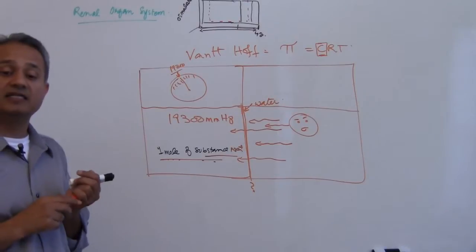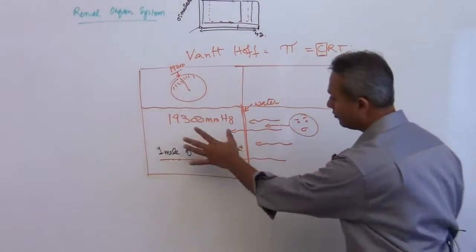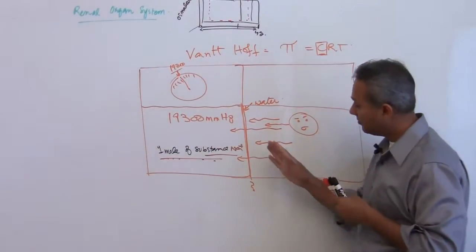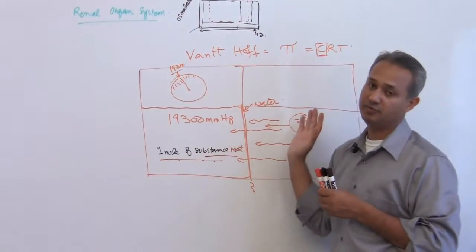That is the amount of pressure which will be generated when one mole of a substance is present here and water is trying to move. The amount of pressure exerted on this membrane is going to be 19,300 millimeter of mercury.